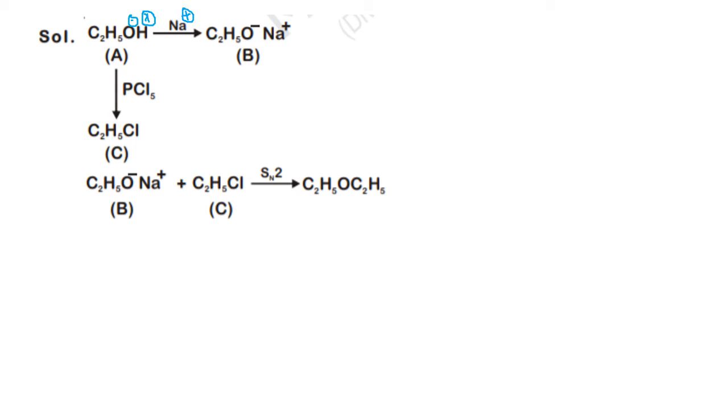Na is plus, so what happens is in reaction of C2H5OH, Na simply removes H plus and it goes to form C2H5O-Na+.